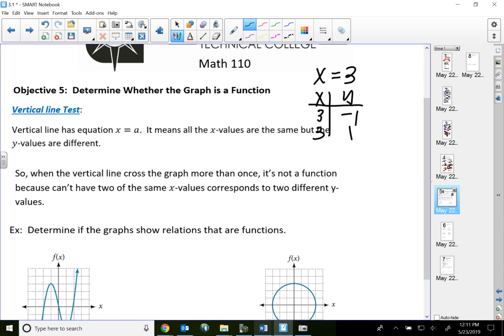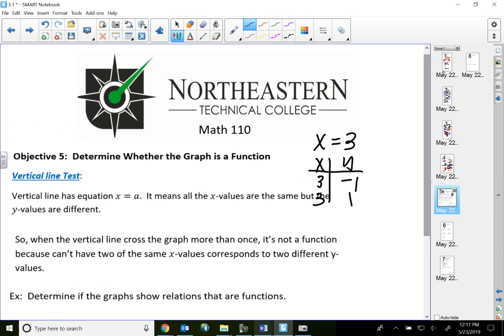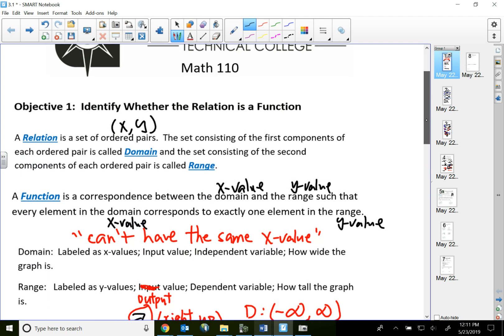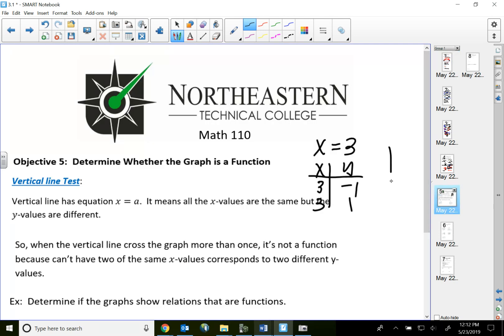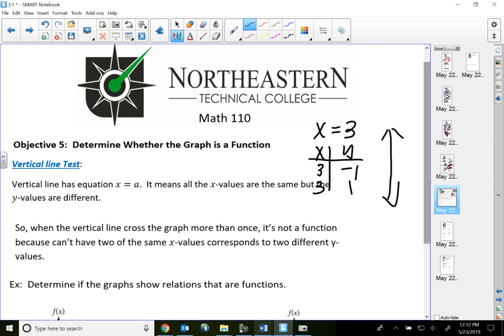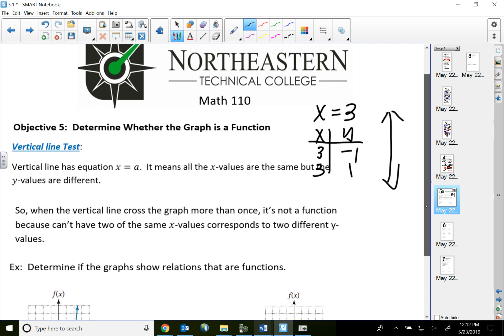Remember now, for a relation to be a function, I cannot have the same x value. So vertical line has tons of the same x value. That means if this vertical line touches my graph more than one time, that graph consists of two of the same x value. Therefore, it's not a function.